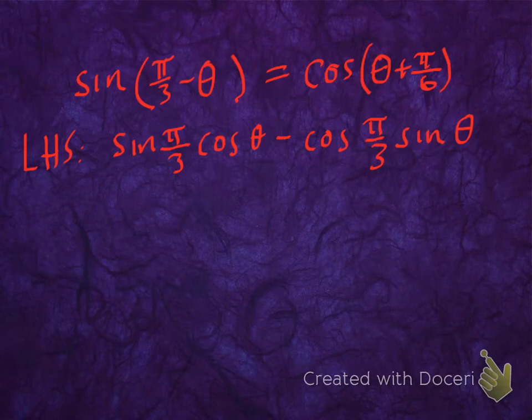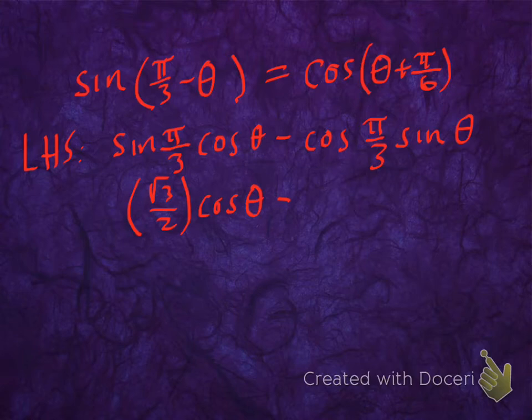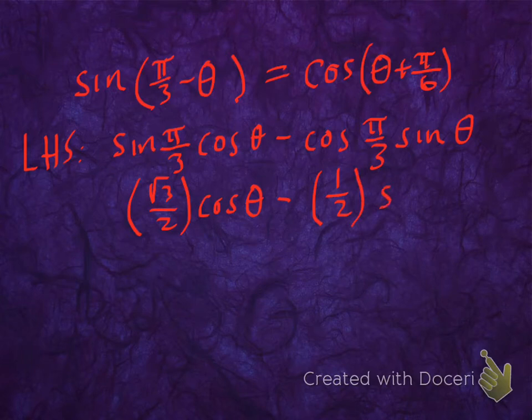Now that I've expanded this, I'm going to replace these trig expressions with actual unit circle values. The sine of pi over 3 is root 3 over 2. Cosine of theta stays as cosine theta. Then I subtract, and cosine of pi over 3 is 1 half. Sine of theta just stays as sine theta.